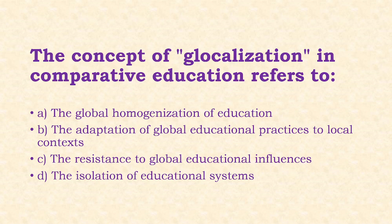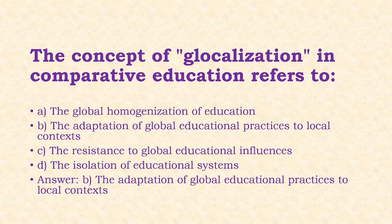Next: The concept of localization in comparative education refers to the adaptation of global educational practices to local contexts. Options: global homogenization of education; adoption of global educational practices to local contexts; resistance of global educational influences; isolation of educational systems. The answer is option B.